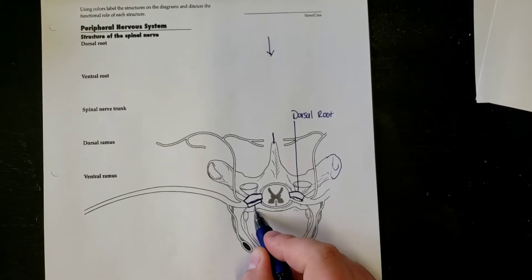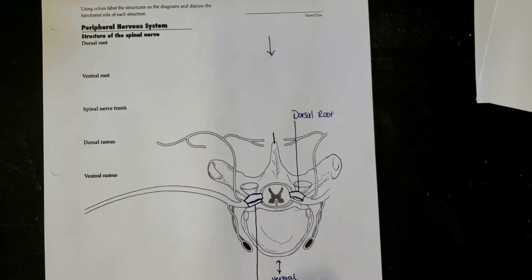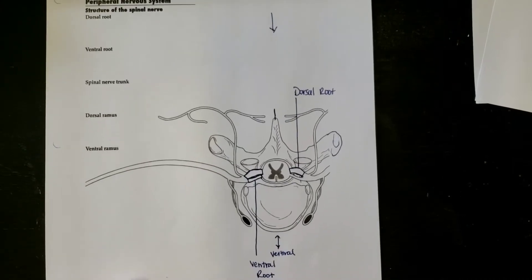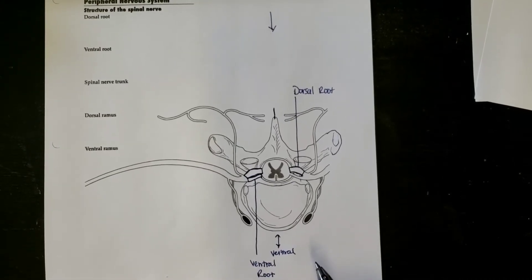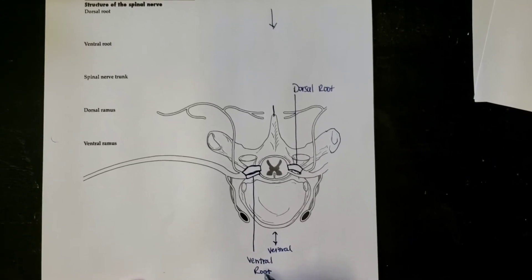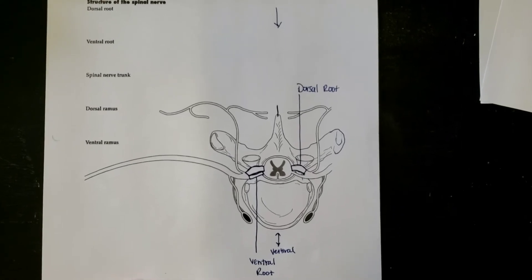So this is going to be your ventral root. There we are, you can kind of see that. All of your motor information will be received or be directed through here.